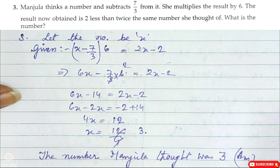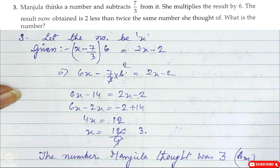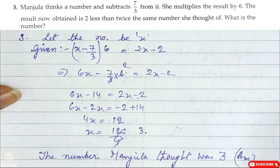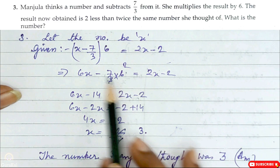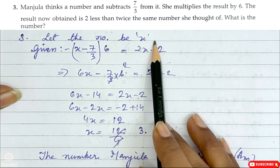Question number 3: Manjula thinks of a number and subtracts 7/3 from it. Then she multiplies the result by 6. The result now obtained is 2 less than twice the same number she thought of. What is the number? Let the number be x.